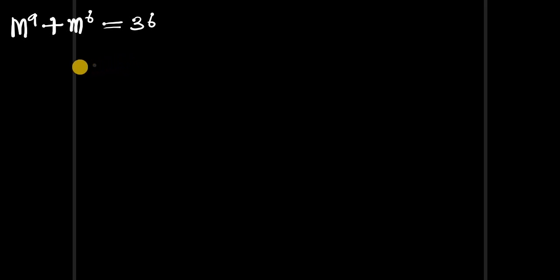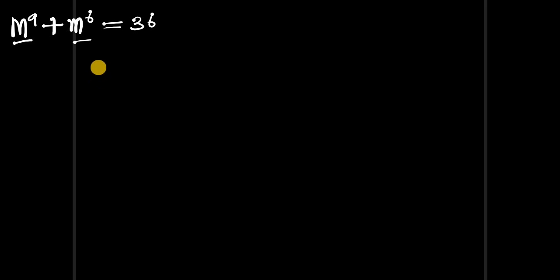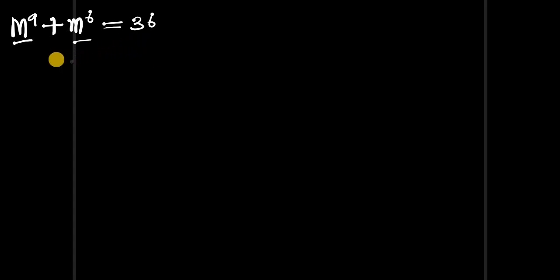Hello! In this video we are going to solve this interesting exponential problem. We have m power 9 plus m power 6 equals to 36. I encourage you all to watch this video to the end — you're going to learn so much. I'm going to explain step by step on how to solve this kind of exponential problem.